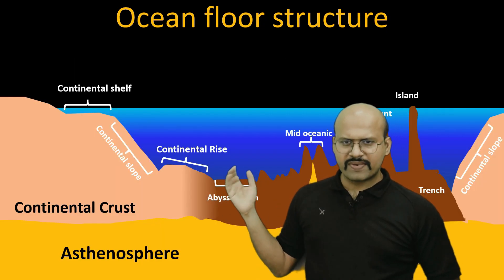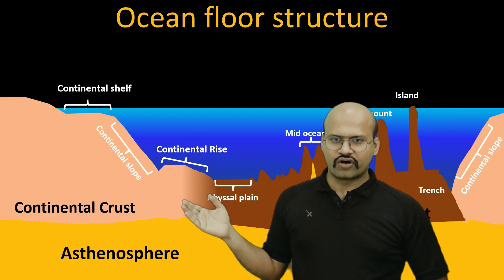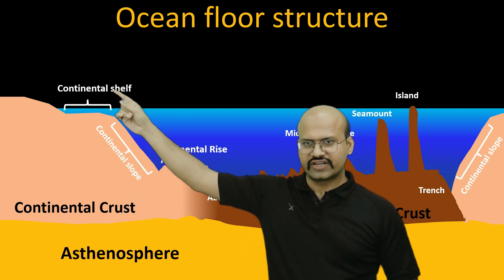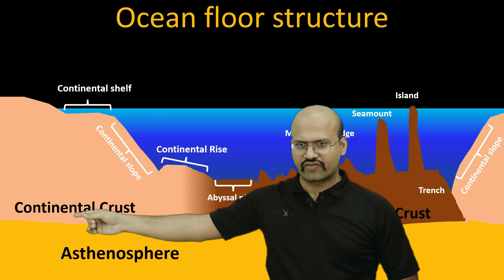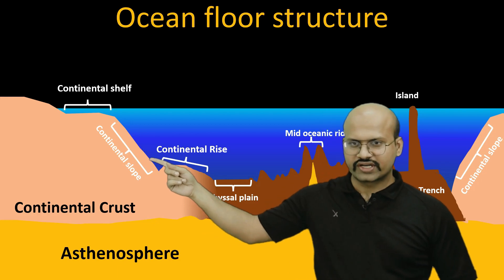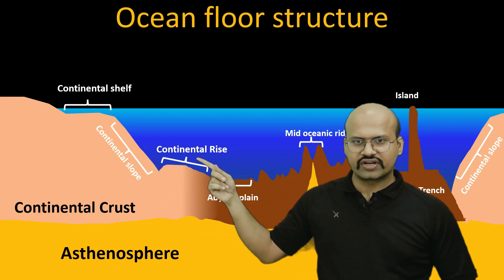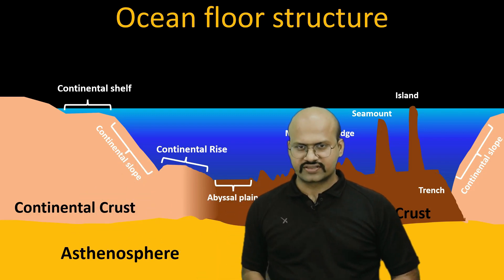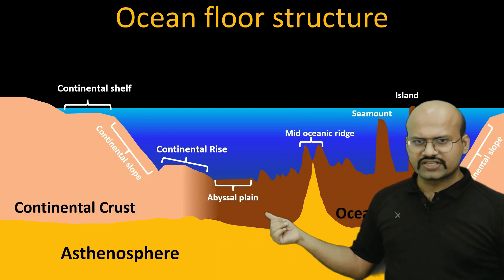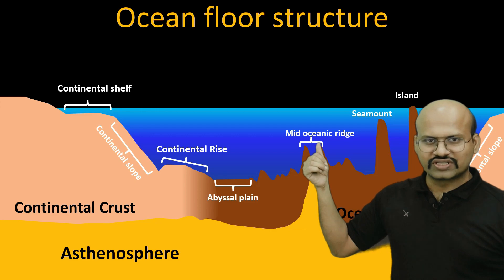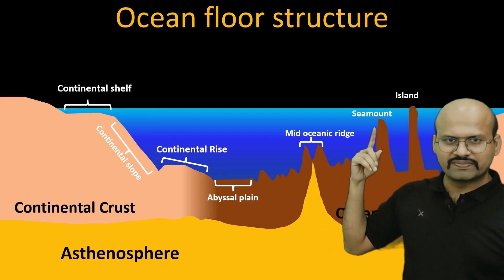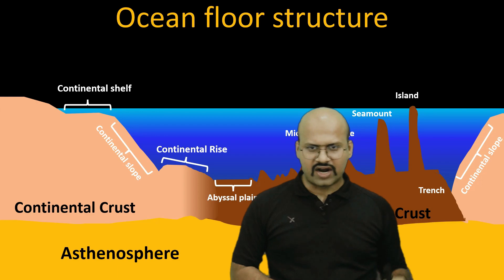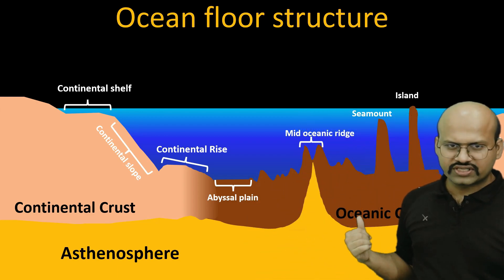Here we can see the diagrammatic representation of the ocean floor. It starts with the continental shelf, which is part of the continental crust, then we see the continental slope and the continental rise. All three structures are part of the continental crust. Then we see abyssal plains, mid-oceanic ridges, seamount, highlands, and trench — all part of the oceanic crust.